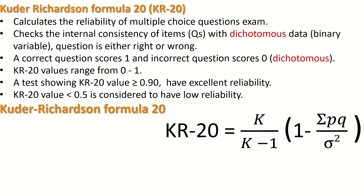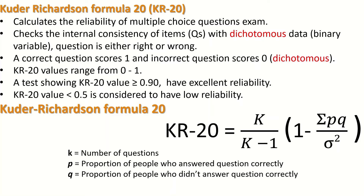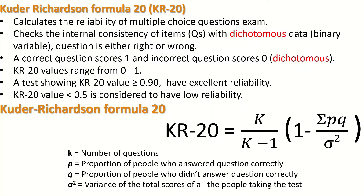The KR20 formula is: KR20 equals K divided by (K minus 1), multiplied by 1 minus the summation of P multiplied by Q, divided by the variance. K stands for the total number of questions. P stands for the proportion of people who answered the question correctly. Q is the proportion who did not answer correctly, and the variance is the variance of the total score for all students participating in the test.